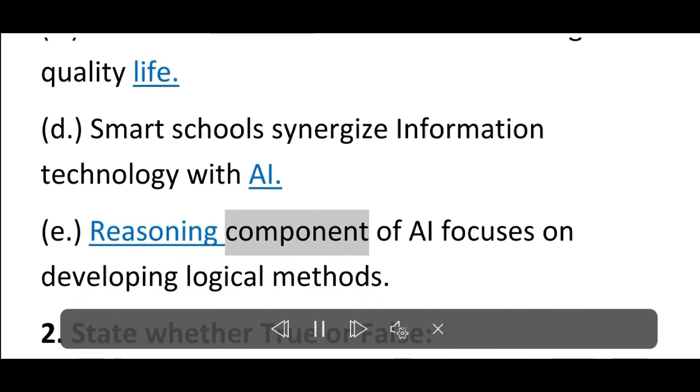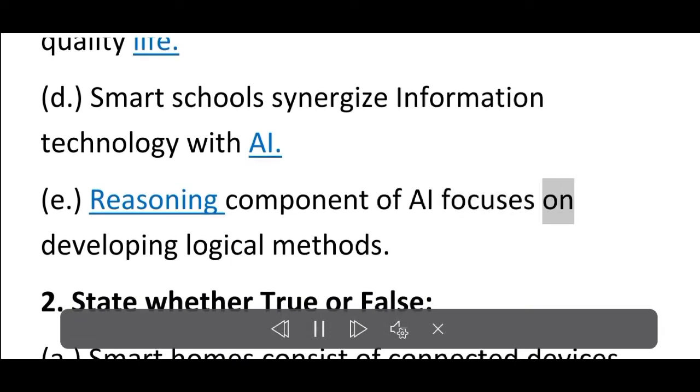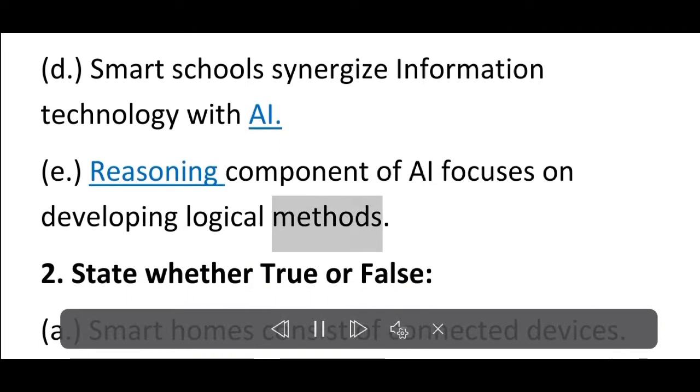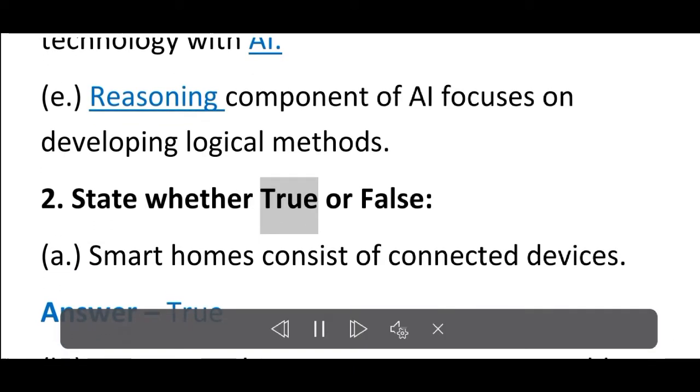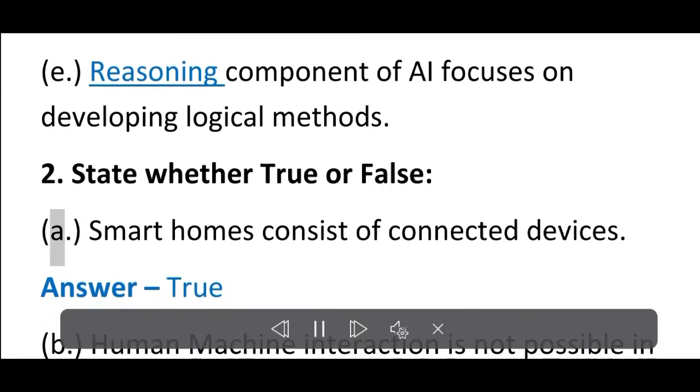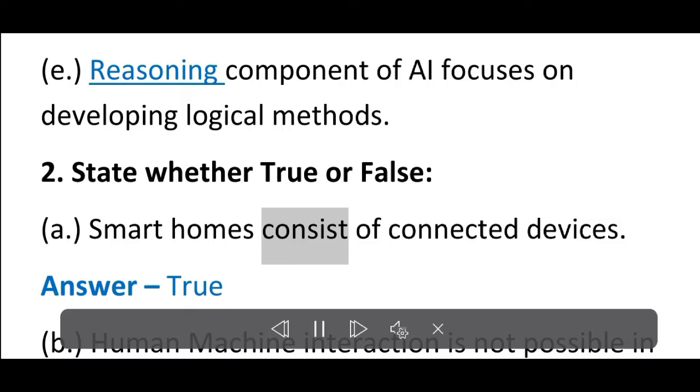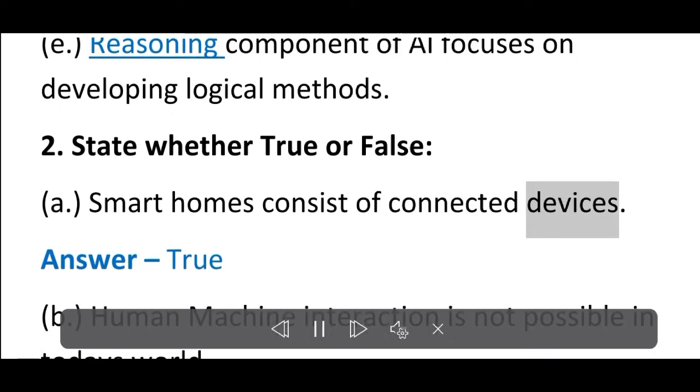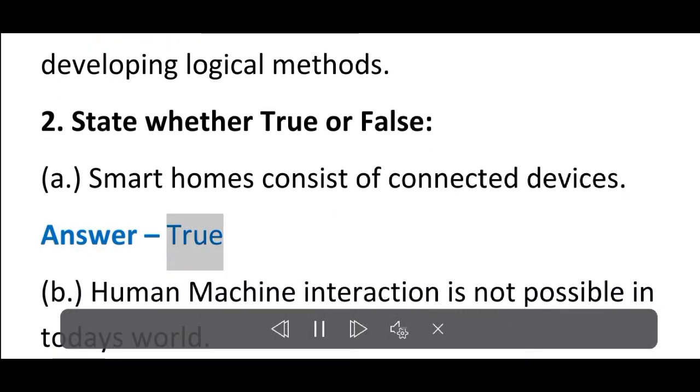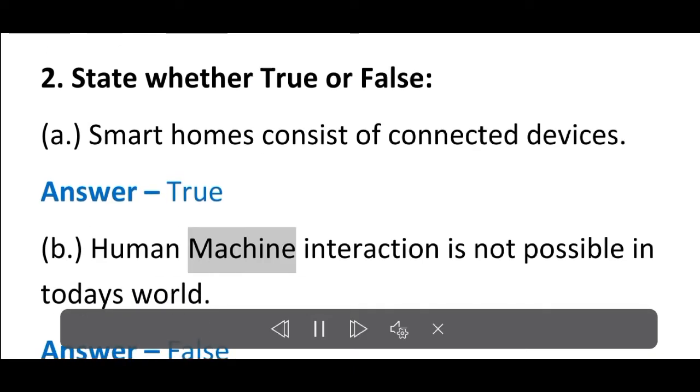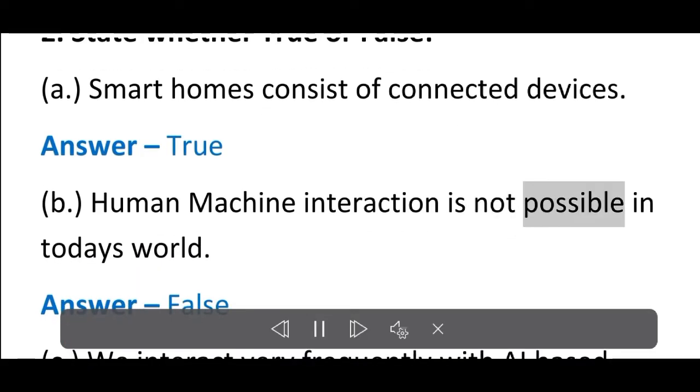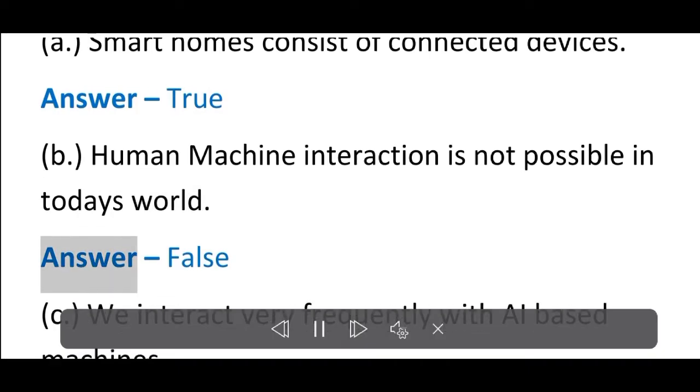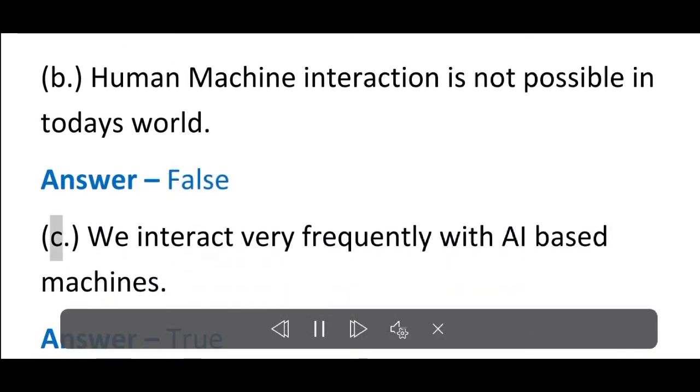2. State whether True or False. A. Smart homes consist of connected devices. Answer: True. B. Human machine interaction is not possible in today's world. Answer: False.